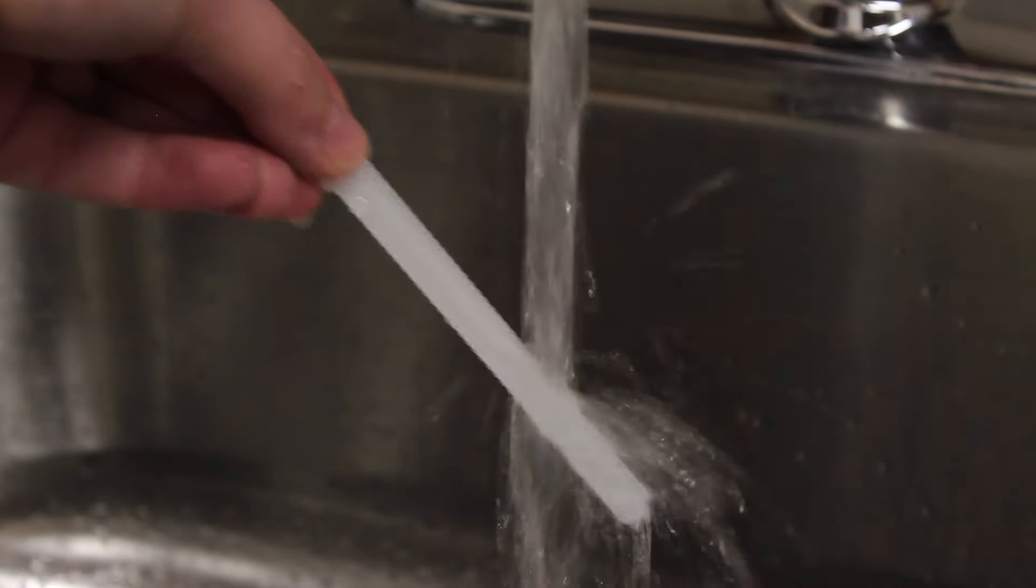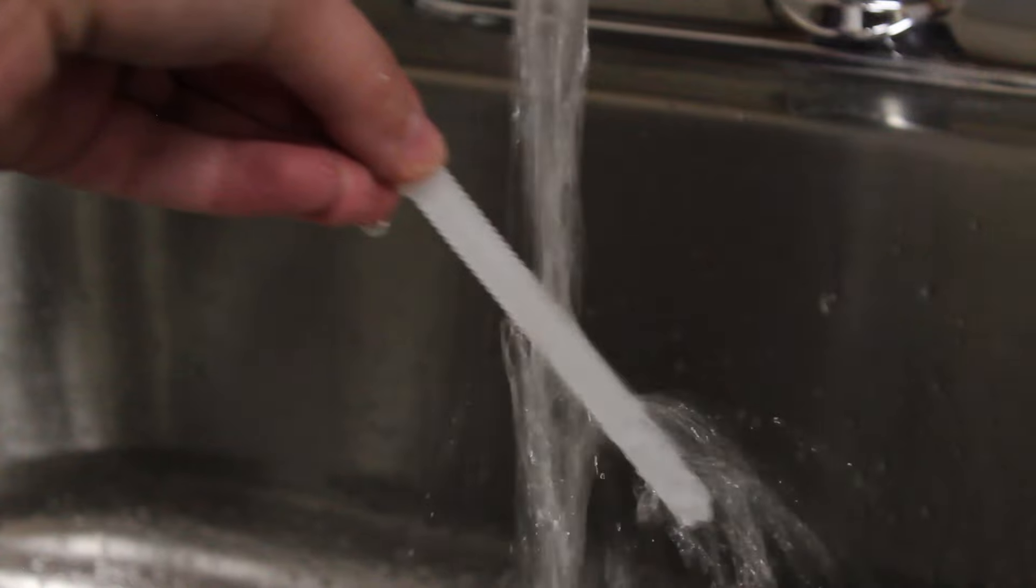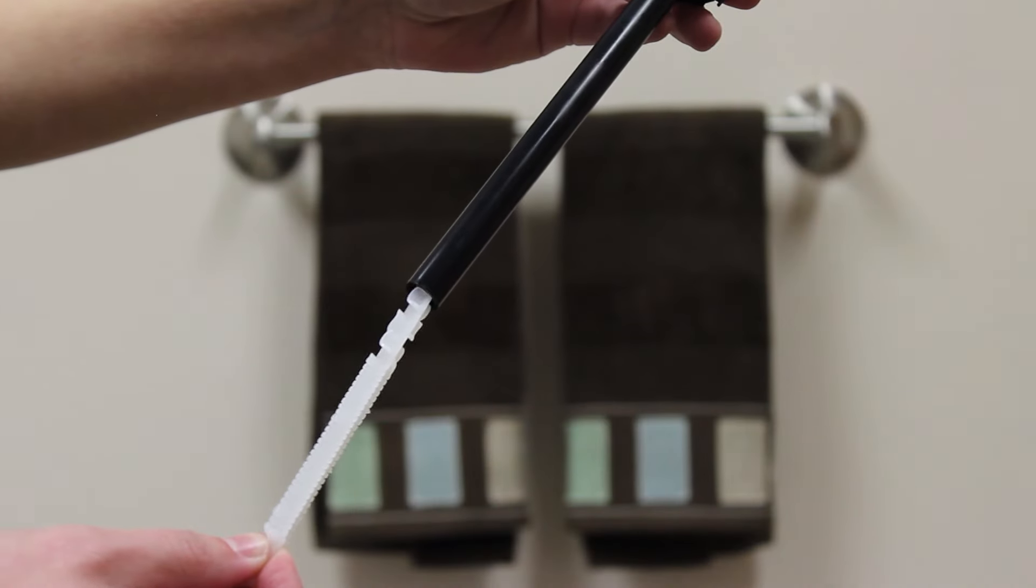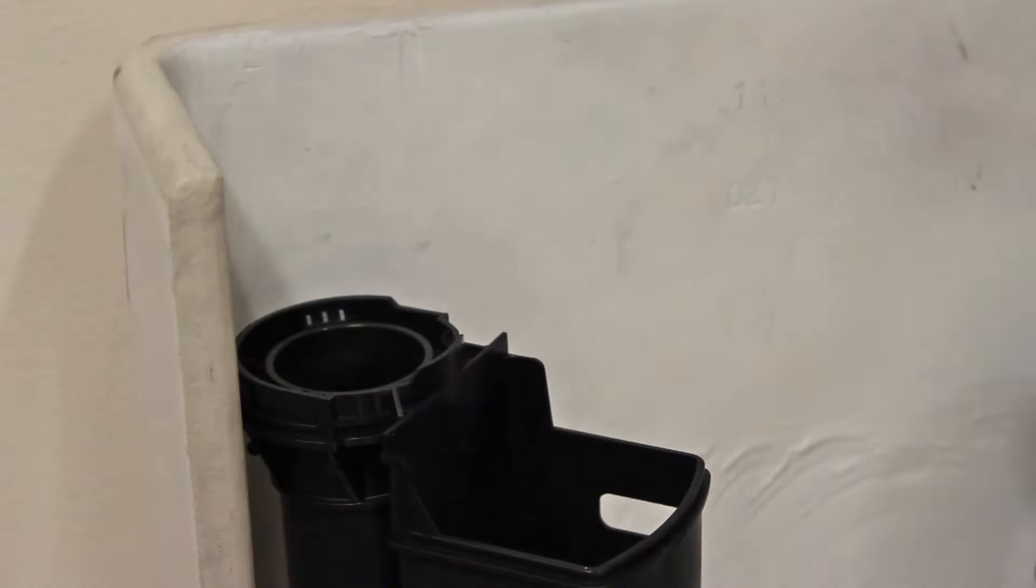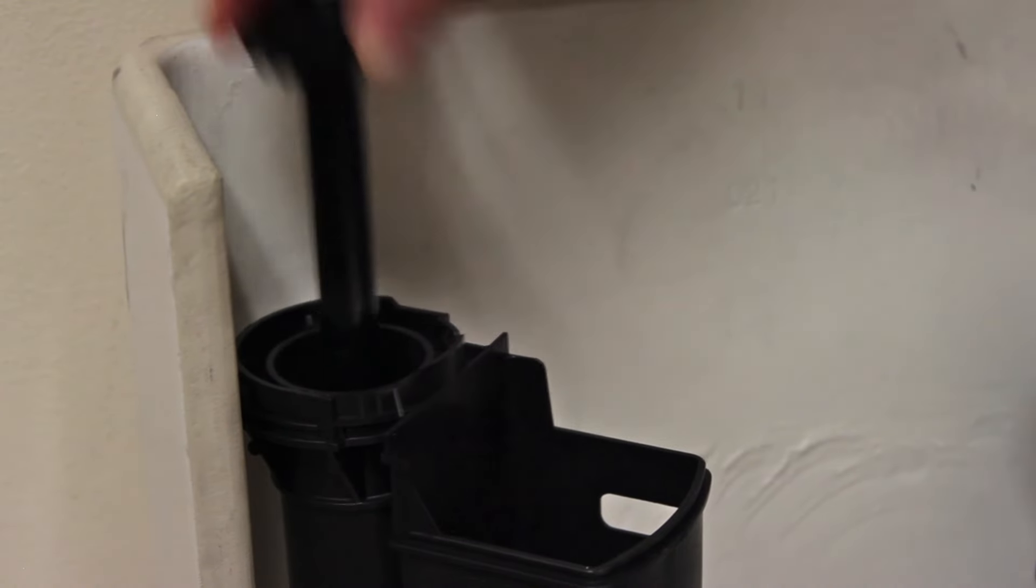Rinse the strainer under warm water to remove any sediment. Now insert the strainer back into the supply tube and insert the supply tube back into the valve body.